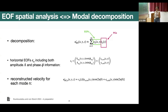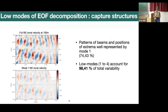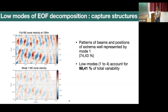With this we reconstruct the velocity for each mode n using the EOFs for the vertical structure and the corresponding EOF patterns in the horizontal. The result: above we have the zonal velocity in full at a particular depth and below the mode one reconstruction. The patterns of the beams and positions of the extrema are quite well represented by mode one, which accounts for about 75% of the variability. The total first four modes — the low modes — account for 98% of the total variability.